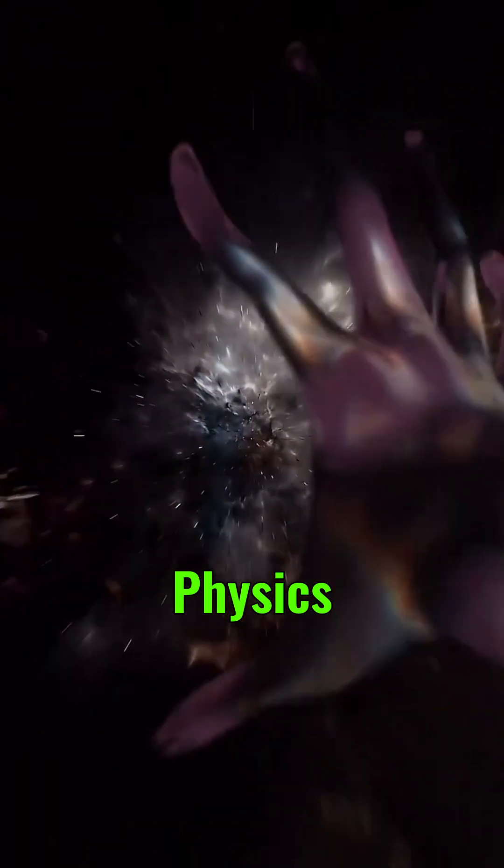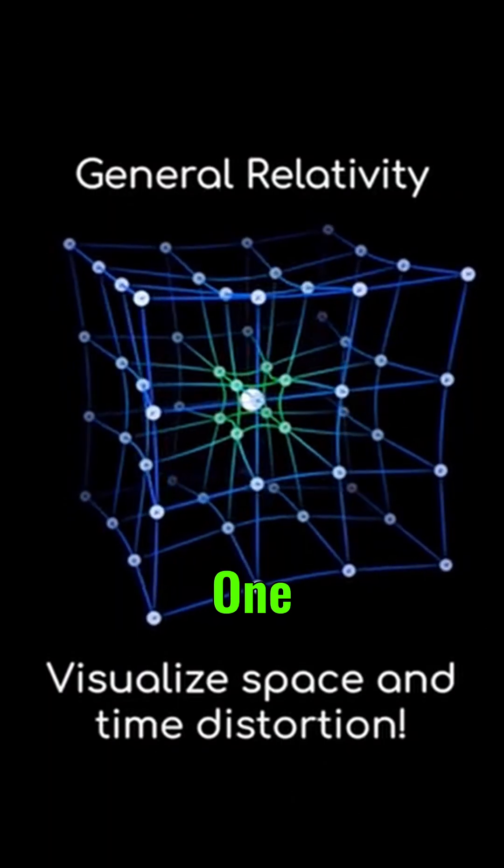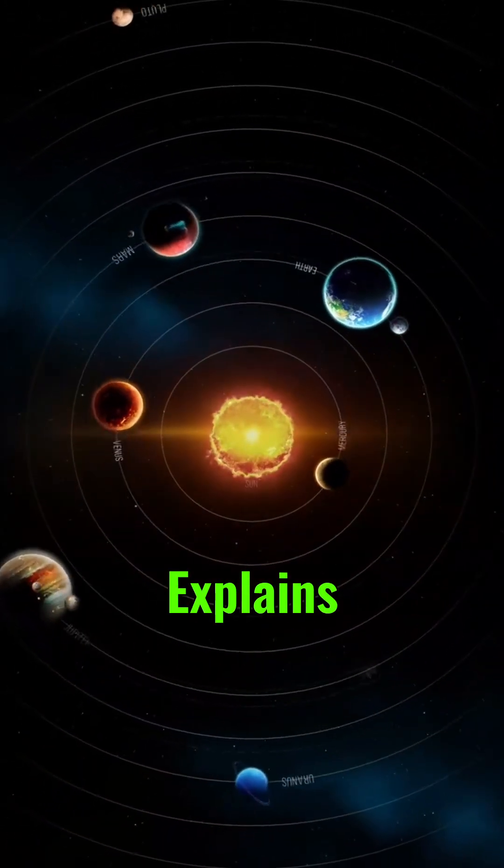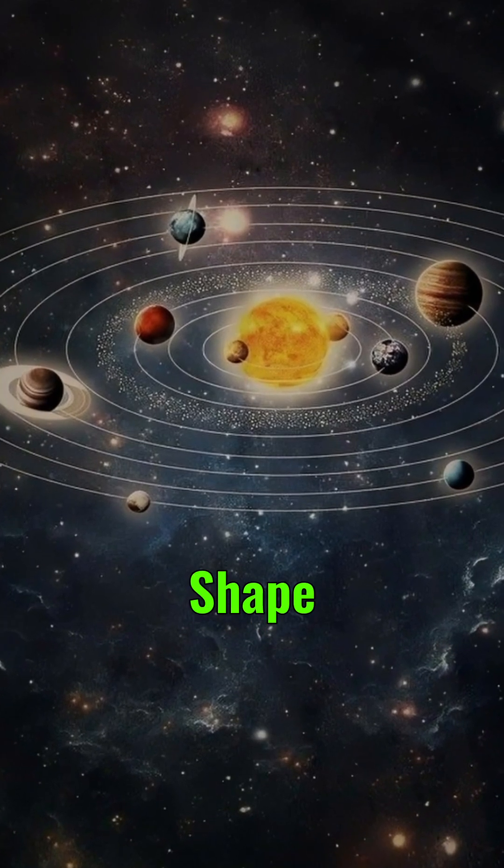Right now, modern theoretical physics is dominated by two massive yet incompatible pillars. On one side, you have general relativity. This is Einstein's math, which explains the big stuff—gravity, planets, stars, and the shape of the cosmos.